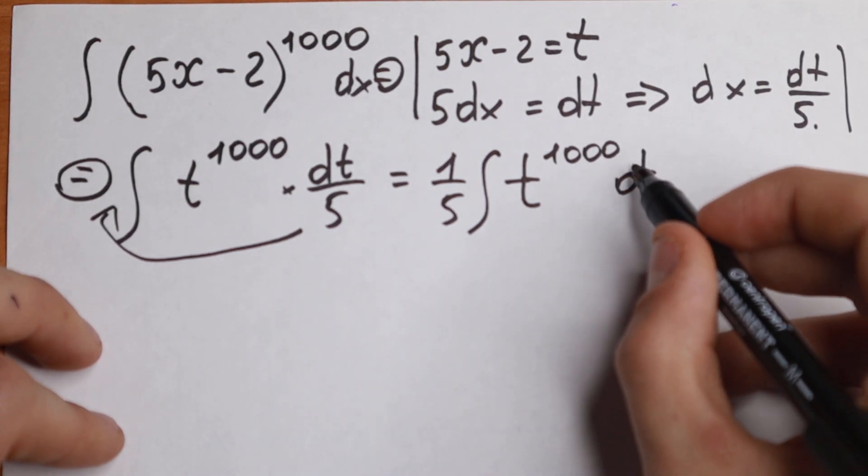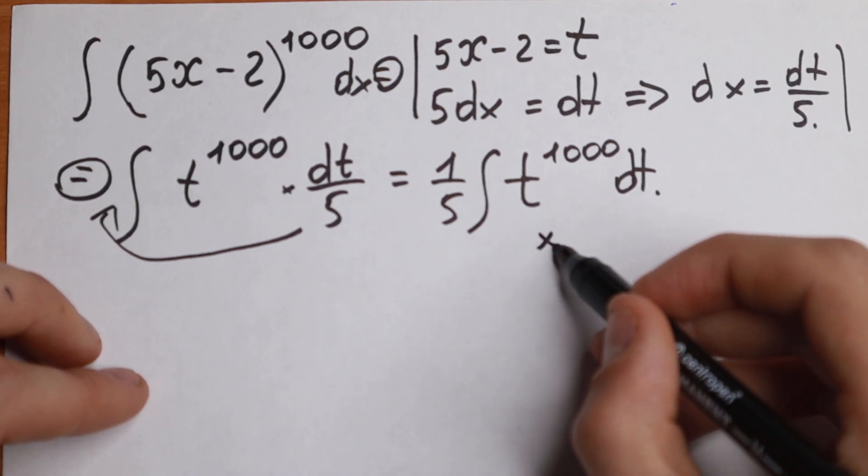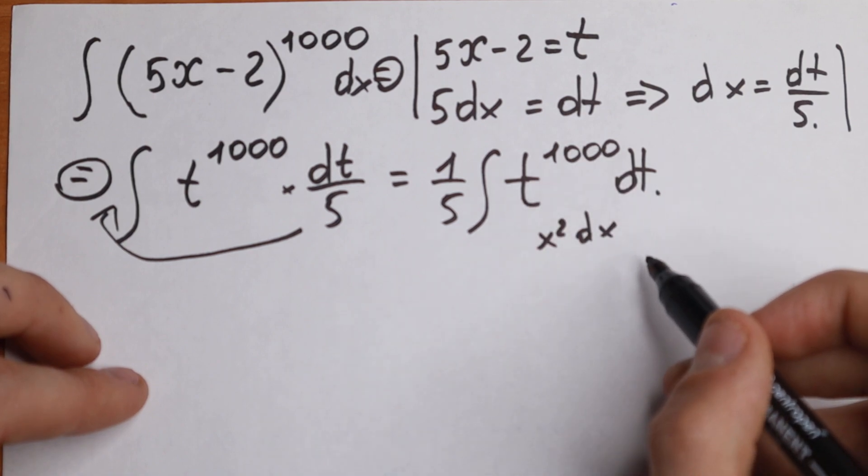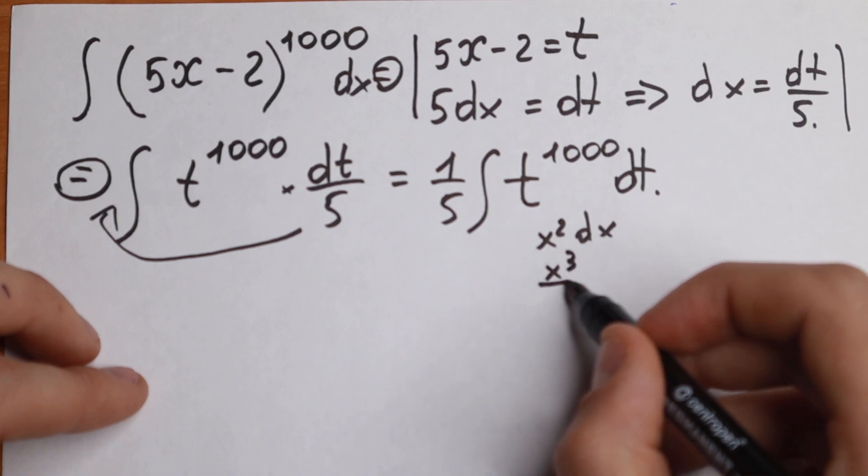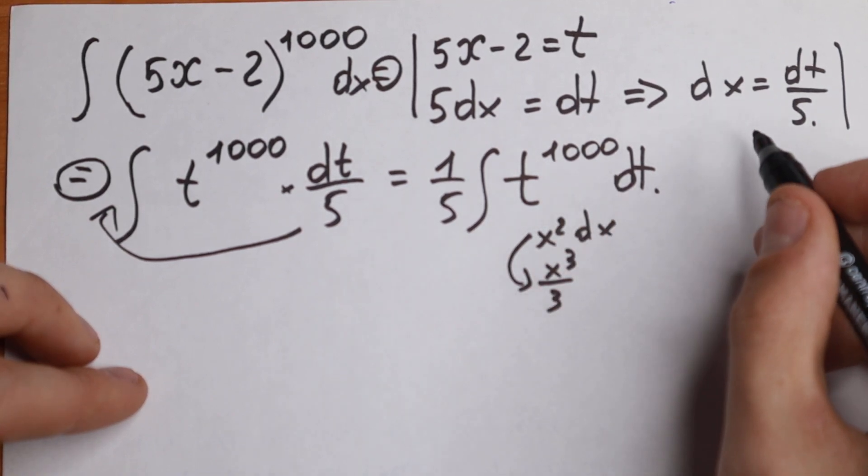So take a look. This is our table case. Because we have, for example, x squared dx. But right here we have t to the power 1000 dt. So we integrate this how? We integrate x squared as x cubed dividing by 3. How can we integrate this?